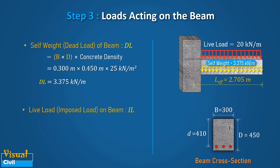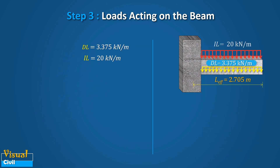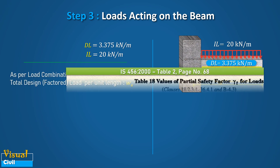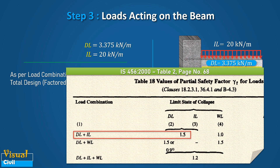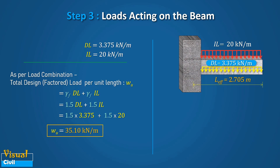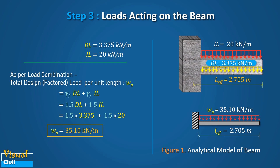The live load or imposed load on the beam is given as 20 kN per meter. After getting the dead load and imposed load, compute the total design or factored load per unit length using a load combination factor of 1.5 as given in table 18 of IS 456. Thus, the total design or factored load per unit length equals 1.5 times dead load plus 1.5 times imposed load, which is equal to 35.10 kN per meter. This gives the analytical model of the cantilever beam as shown in figure 1.